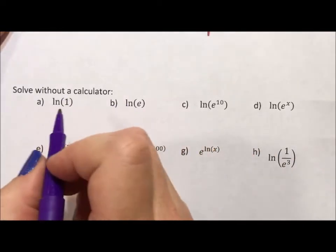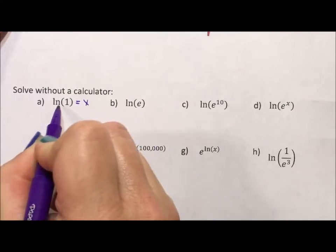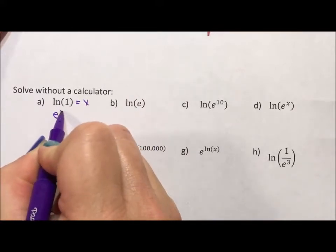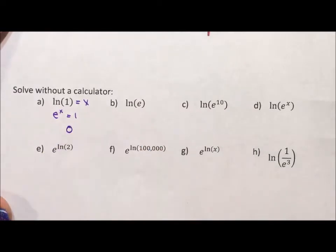So let's start off with the basic. This works for any log. Remember, this is asking the question, this is base e, e to what power equals 1? Well, that has to be 0, because anything to the power of 0 equals 1.